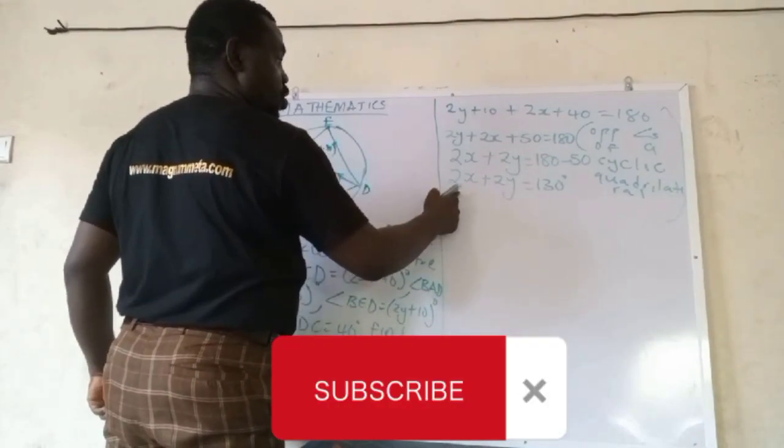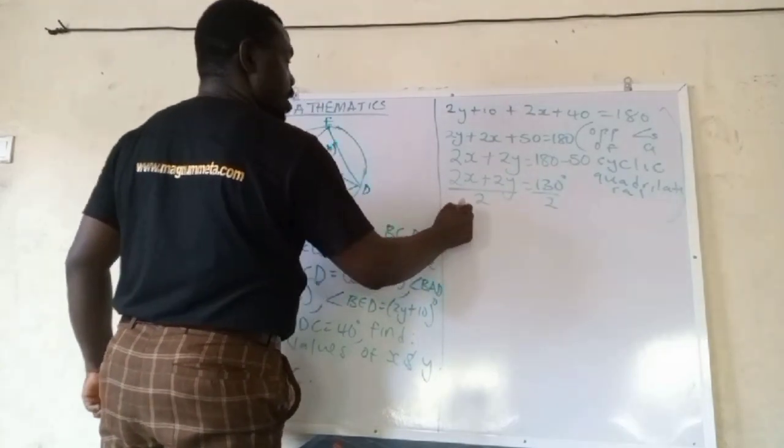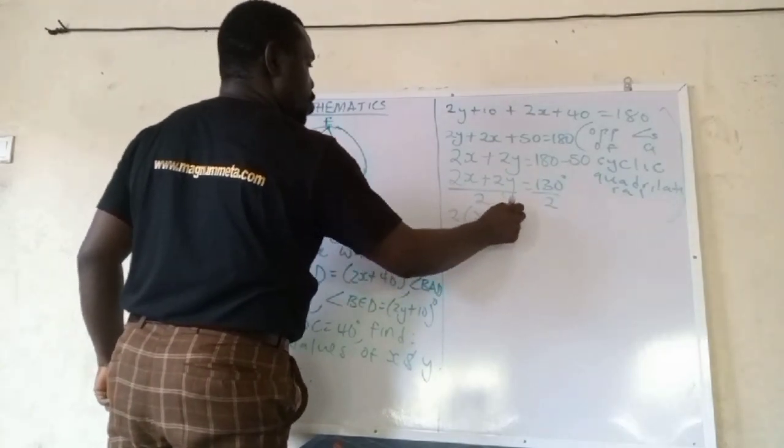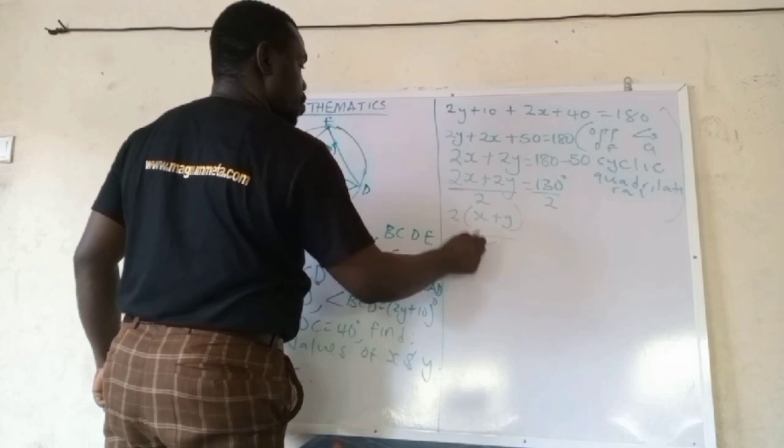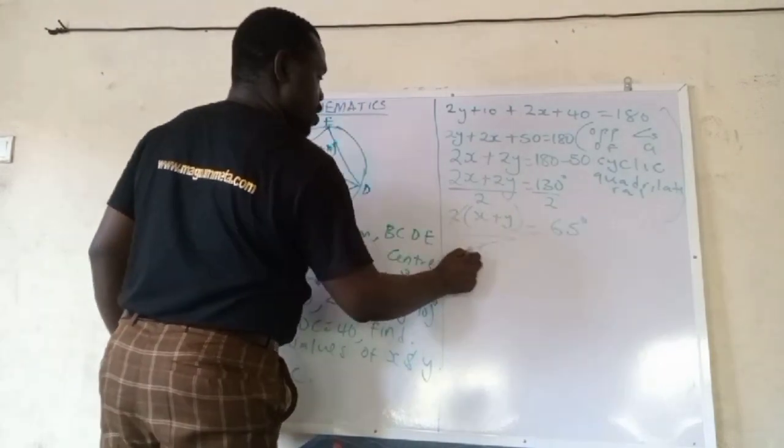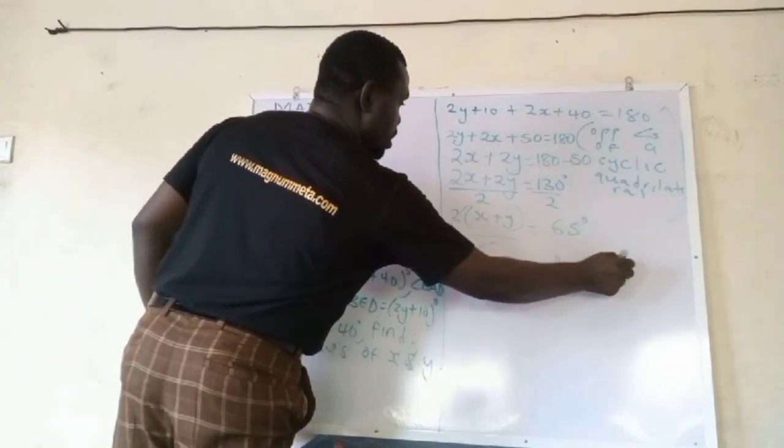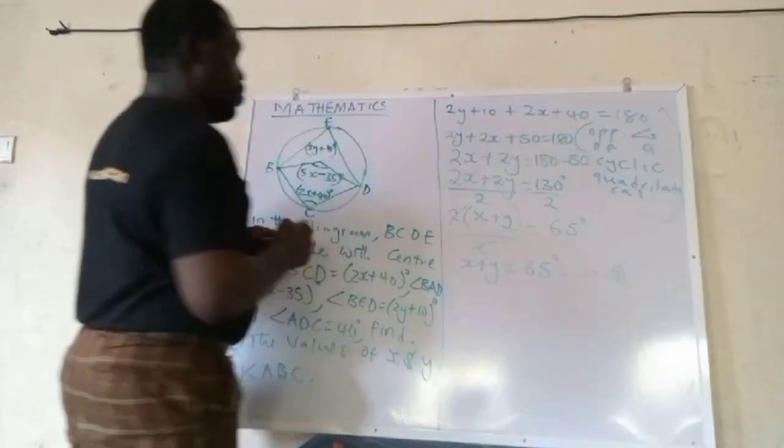So we can divide both sides by 2. If we divide both sides by 2, then we have x plus y. So we cancel and then we have 65 degrees. So x plus y therefore is 65. This automatically is equation 1.